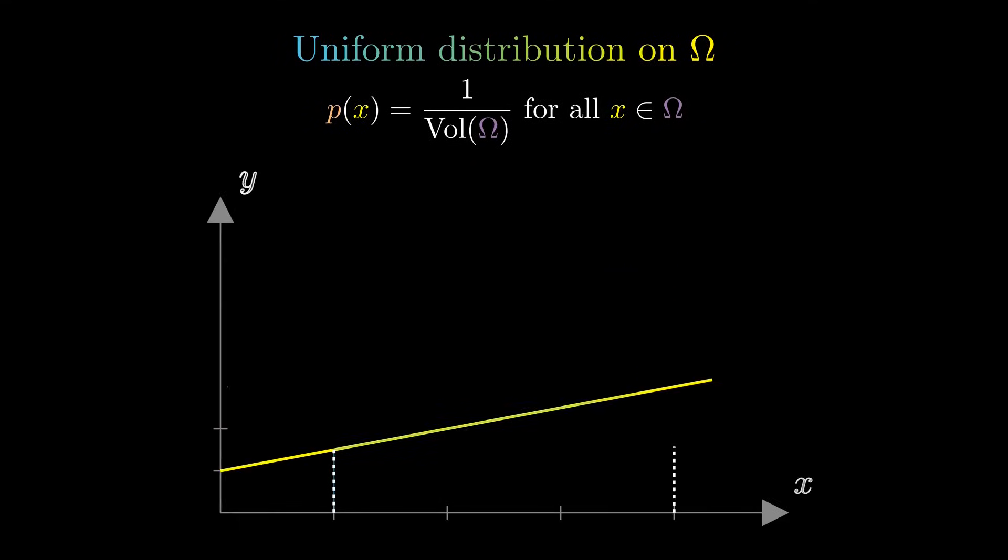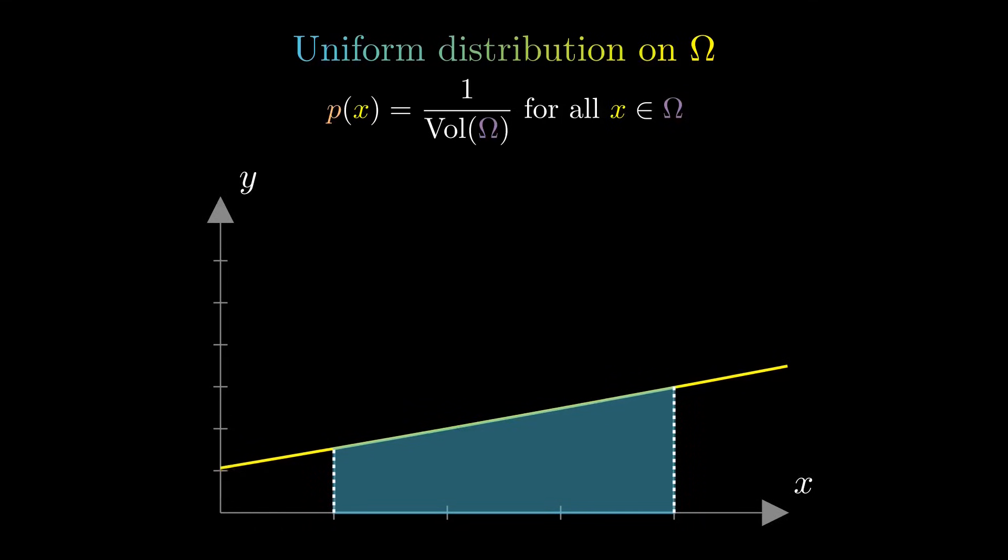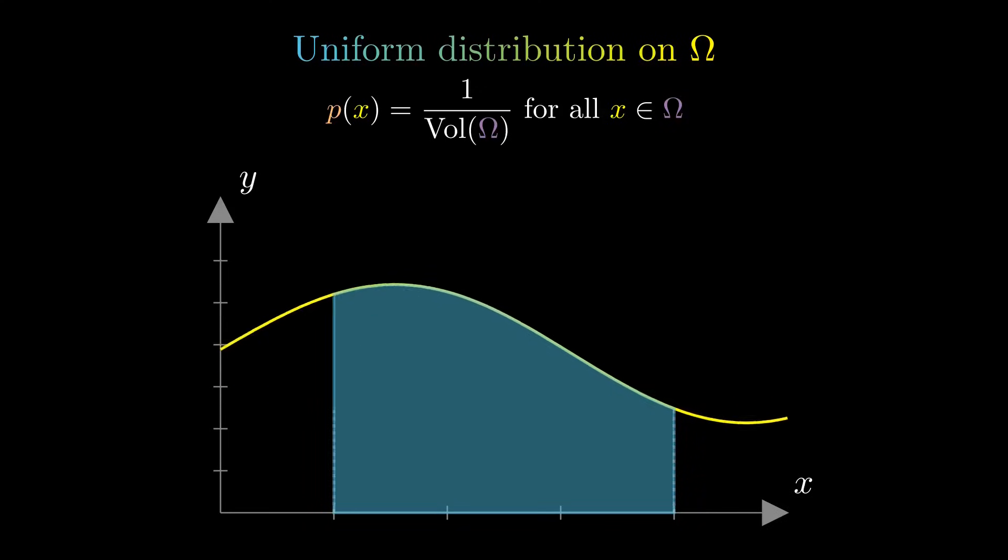It is a good choice if we seek a general-purpose method to approximate a variety of integrals, provided the integrands are sufficiently well-behaved, and hence avoid crafting a tailored sampling distribution for each function. However, the uniform distribution is not always the best choice.